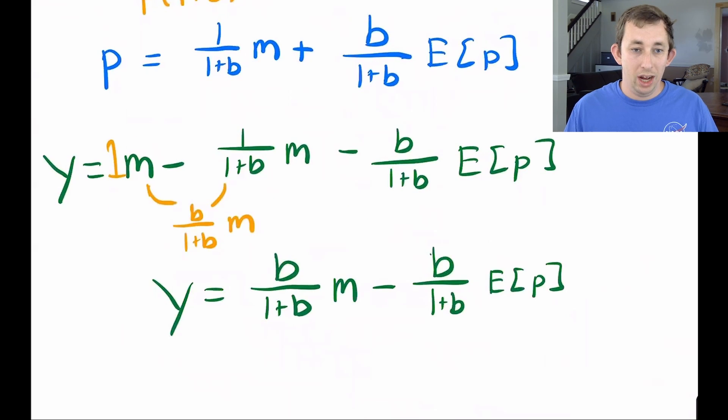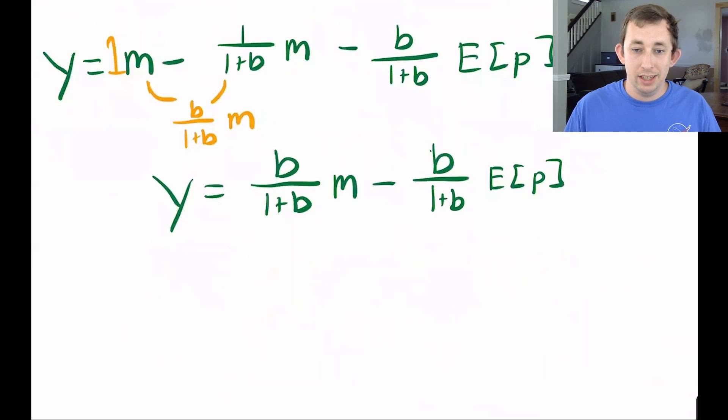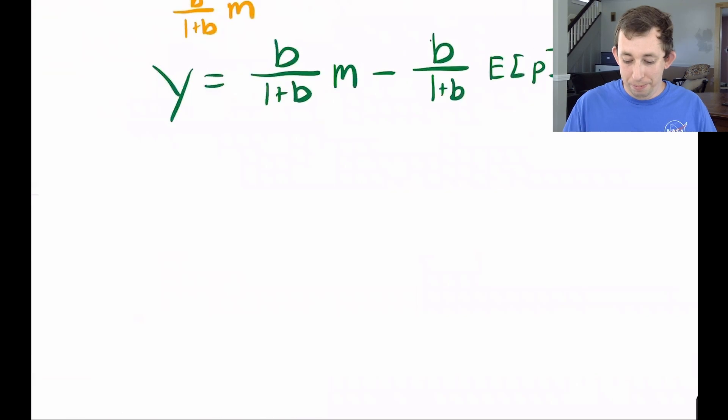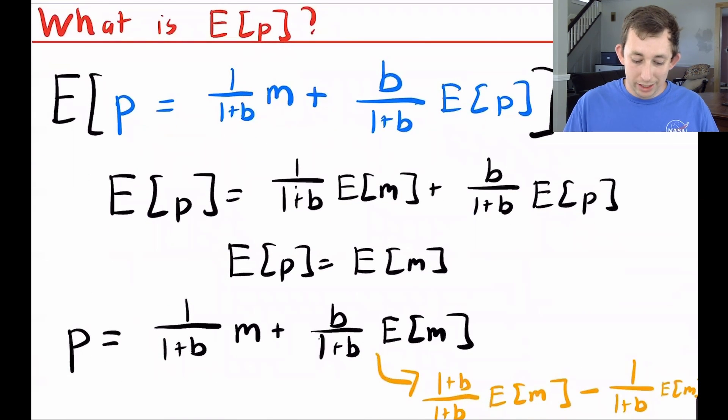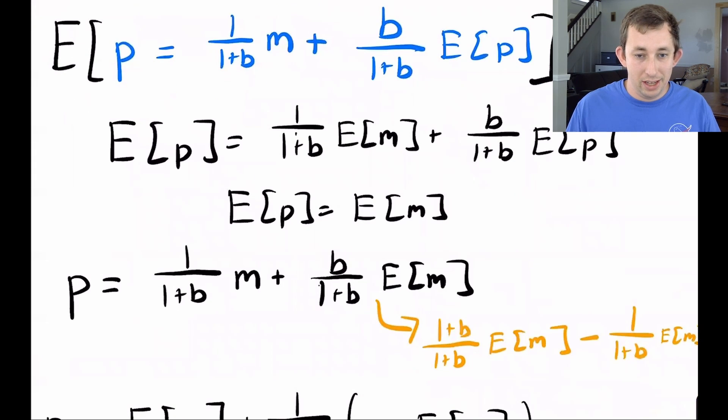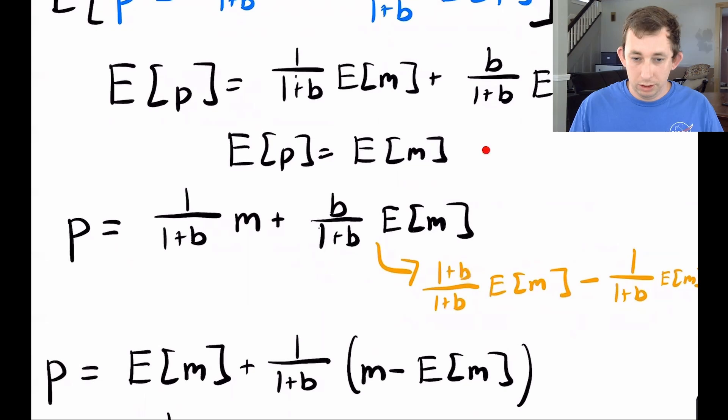So here I am going through the algebra, and I'm going to get to this blue equation where p is equal to one over one plus b times the money supply, plus b over one plus b times the expected value of the price level. Notice again, b is this lovely equation right here. So whenever you see b, you're thinking this. Now I can say that y is equal to m minus p. So here is that equation using the blue equation for p. I'm going to solve that and get that y equals b over one plus b times m minus b over one plus b times the expected value of the price level. Now we have this expected value of p in here, but what is the expected value of p? Can we simplify that any further?